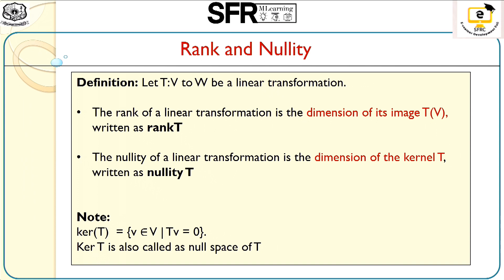The nullity of the transformation is nothing but the dimension of the kernel of T. The kernel T is the set of all elements of V for which T of V equals 0. That is, we collect the elements in the domain V for which all images must be equal to 0. If we find the kernel set, its dimension gives the value of nullity of T. This null space, the kernel T, is also called the null space of T.